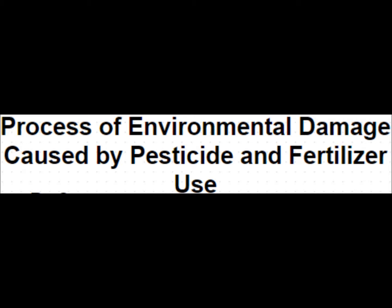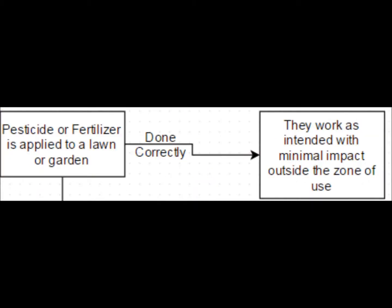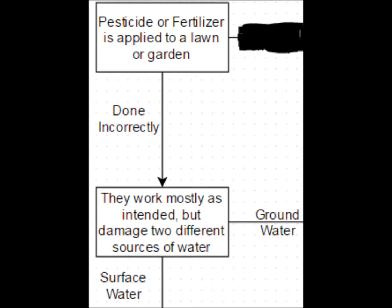To start, if done correctly and used within reason, pesticides and fertilizers have a very minimal impact outside the area of use. However, if used incorrectly, they can be very damaging to two nearby sources of water: groundwater and surface water.